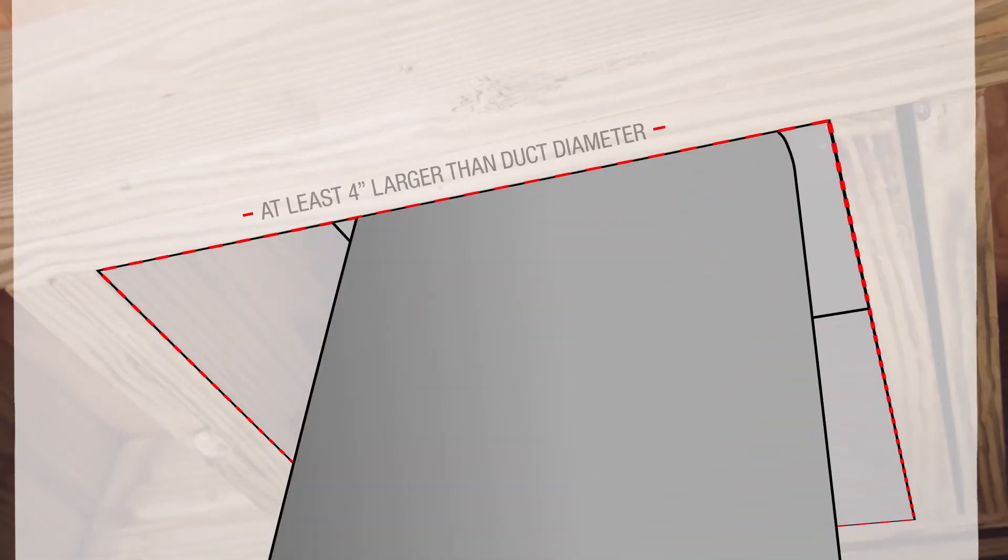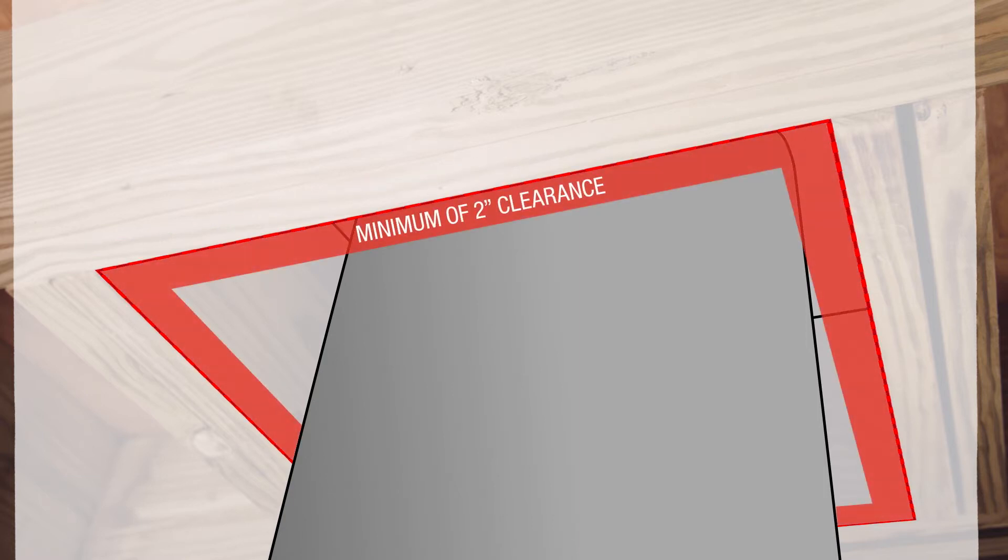The overall opening must be at least four inches larger than the outer diameter of the duct. The duct must be at least two inches away from combustibles at all times.